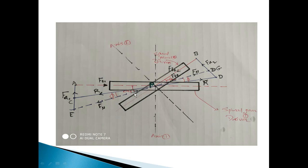The normal reaction force extends in the same line for gear number two. The angle between the tangential force and the normal reaction is always the helix angle — or spiral angle in the case of a spiral gear. Alpha one is the spiral angle for gear number one, and alpha two is the angle between the tangential force and normal force for gear number two. Along with the tangential force, there is also an axial force for gear number one and gear number two.